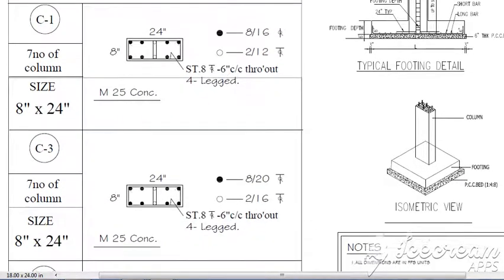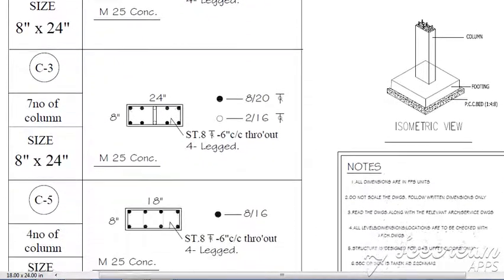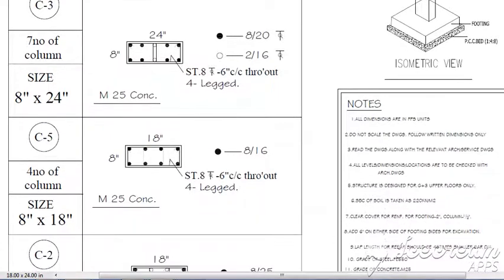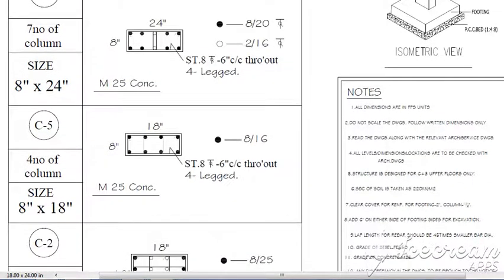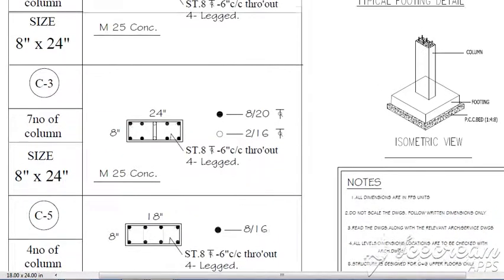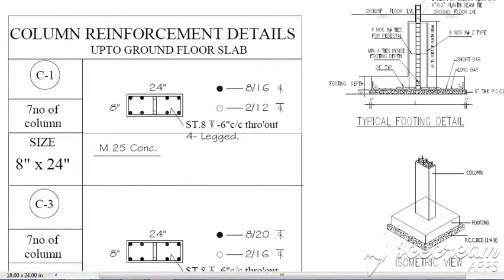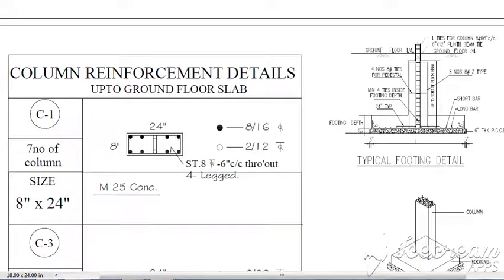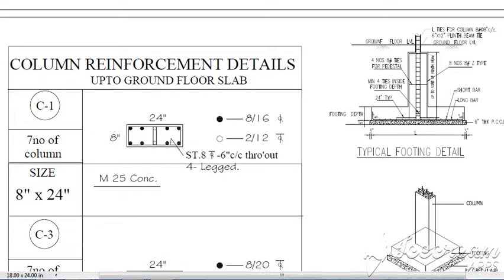Apart from this, even column layouts and column schedules will also be considered for the quantity takeoffs. A column schedule will be basically like this. Most people will not consider the lap length and the hook diameters, but even these lap lengths and hook diameters will also be given accountability during our courses.